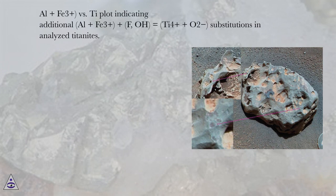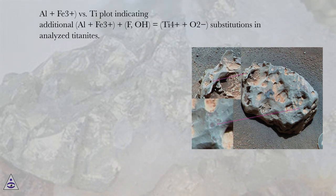Al+Fe3+ versus F plot indicating additional Al+Fe3+−O component in analyzed titanites. Al+Fe3+ versus Ti plot indicating the Al+Fe3+ + F/O = Ti4+ + O2⁻ substitutions in analyzed titanites.